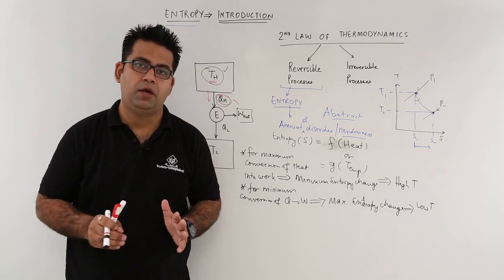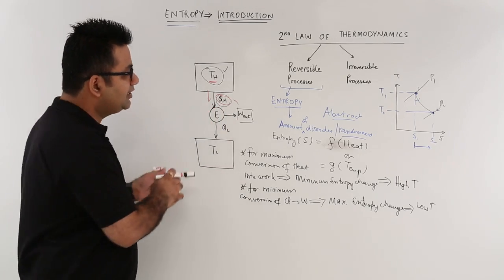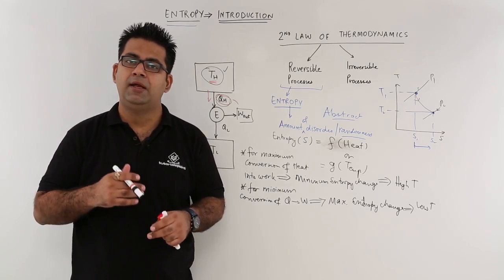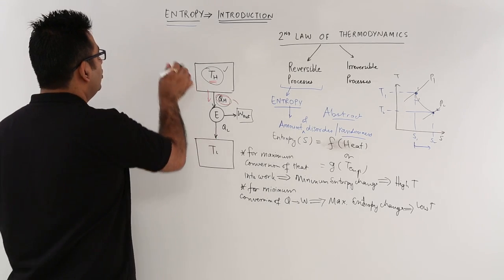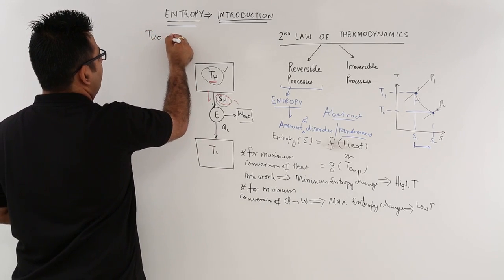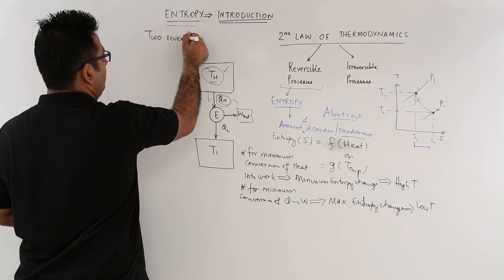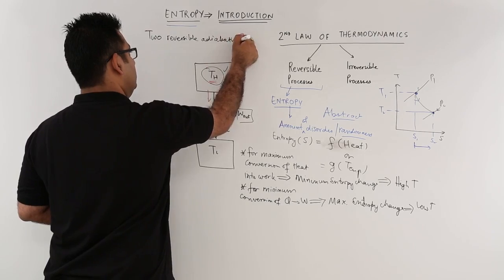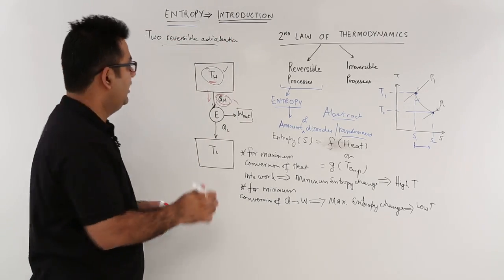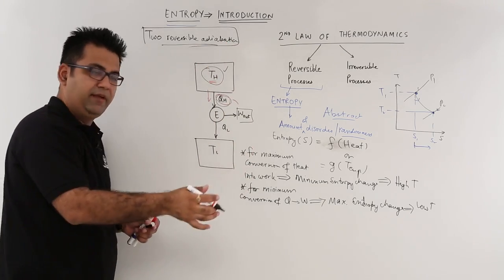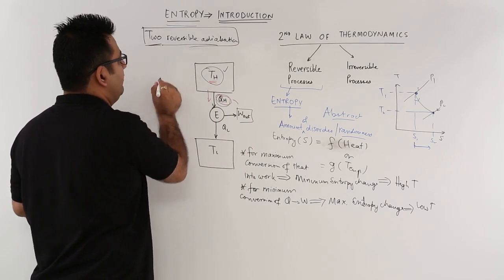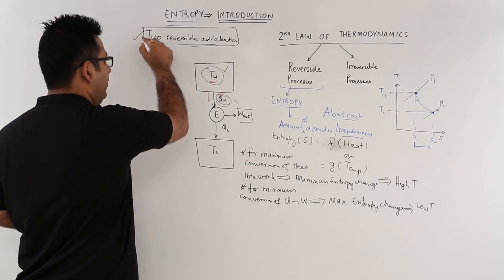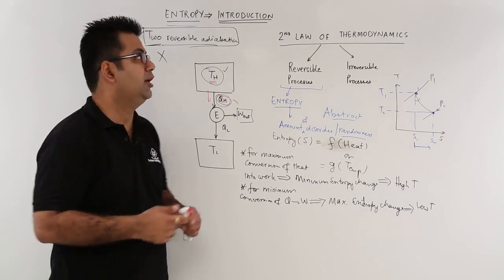This was a brief introduction to entropy. Let's take the discussion forward and prove that two reversible adiabatics can never intersect each other. We will prove this in the next video, and after that we will continue this discussion on entropy further.